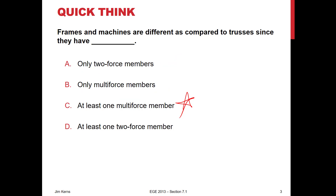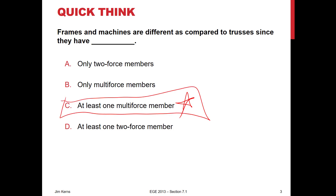Frames and machines are different because they have at least one multi-force member. They may or may not have a two-force member.